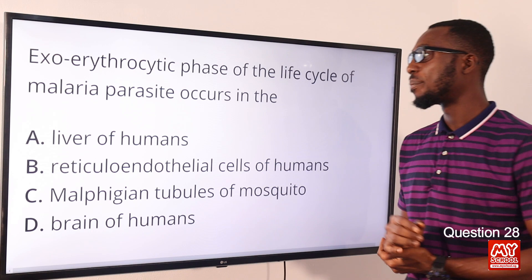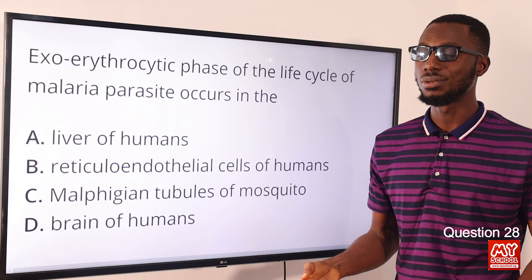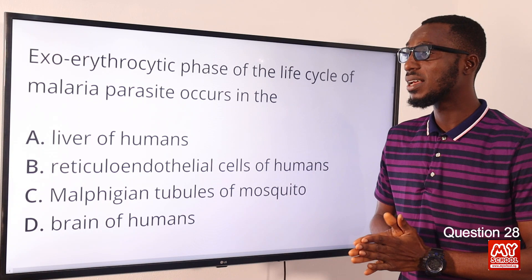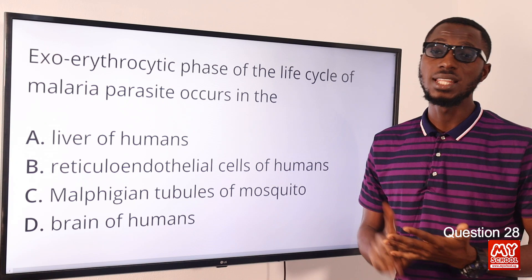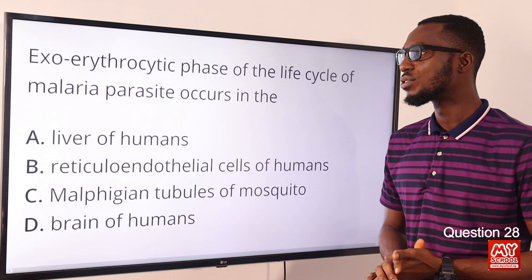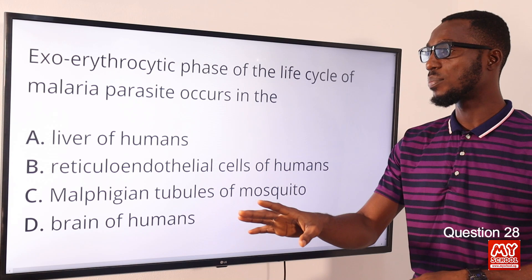Question 28: The exoerythrocytic phase of the life cycle of malaria parasites occurs in the liver. The asexual process of the malaria parasite occurs in humans and the sexual process occurs in mosquitoes. Types of malaria plasmodium include Plasmodium vivax, Plasmodium ovale, Plasmodium falciparum, and Plasmodium malaria. Once an infected mosquito bites someone, what is transmitted is sporozoites, which migrate to the liver.